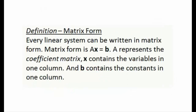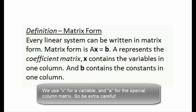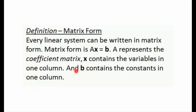One nice thing about linear systems is that they can be written in what's called matrix form, meaning we can take a system of linear equations and write it using matrices. The form is Ax equals b. Here, A represents the coefficient matrix — a special matrix that contains all of the coefficients of the variables. Bold x is a column matrix containing all of the variables, and bold b is another one-column matrix containing all of the constants on the right-hand side of the equal sign.